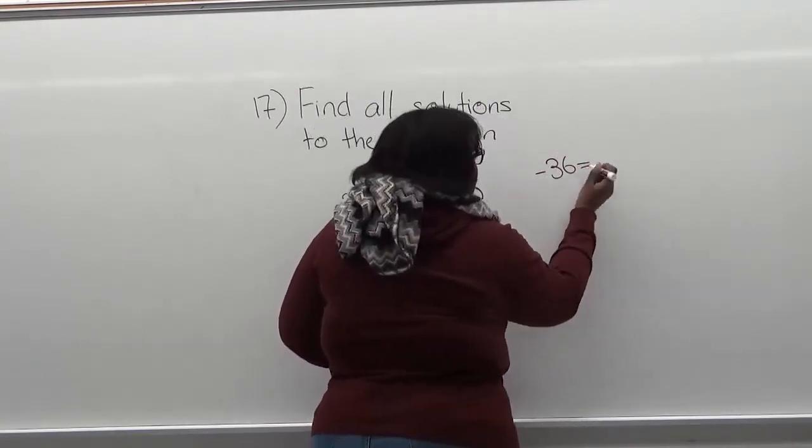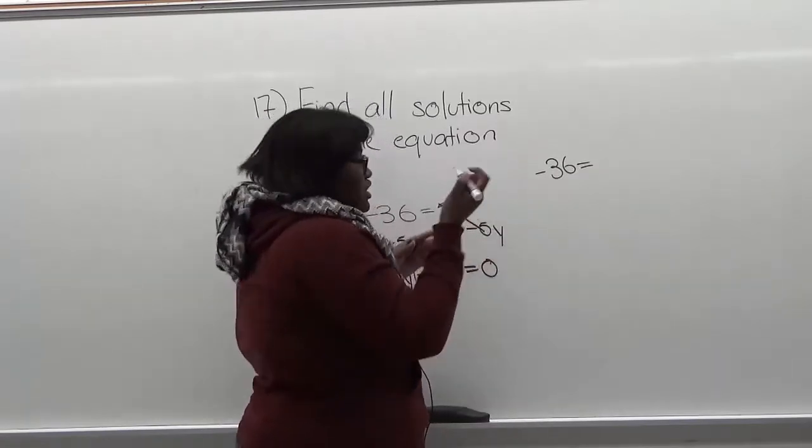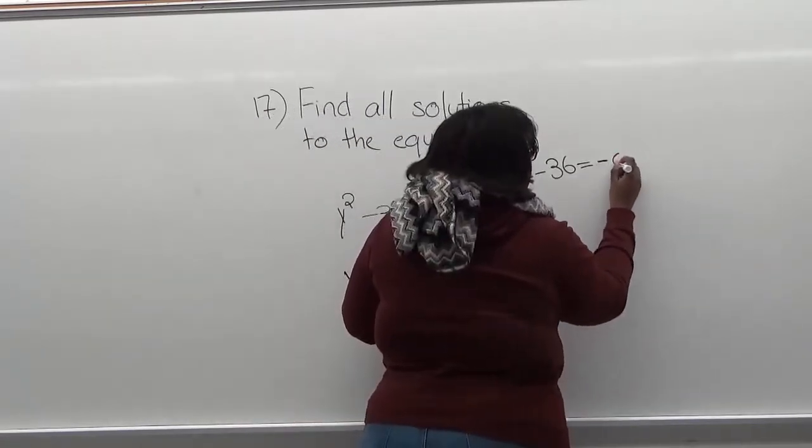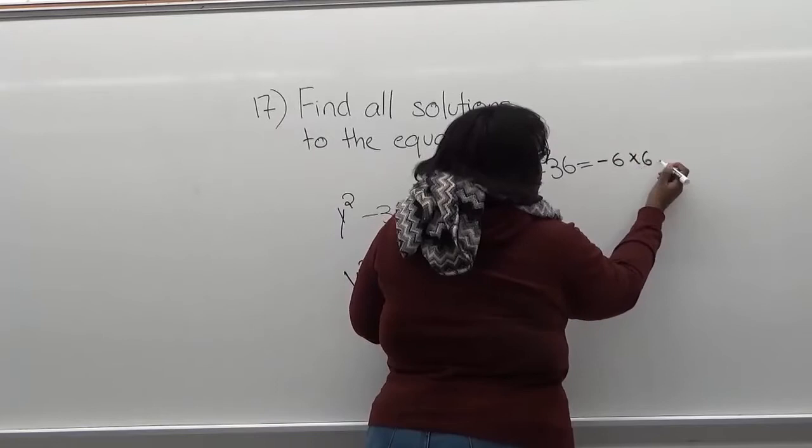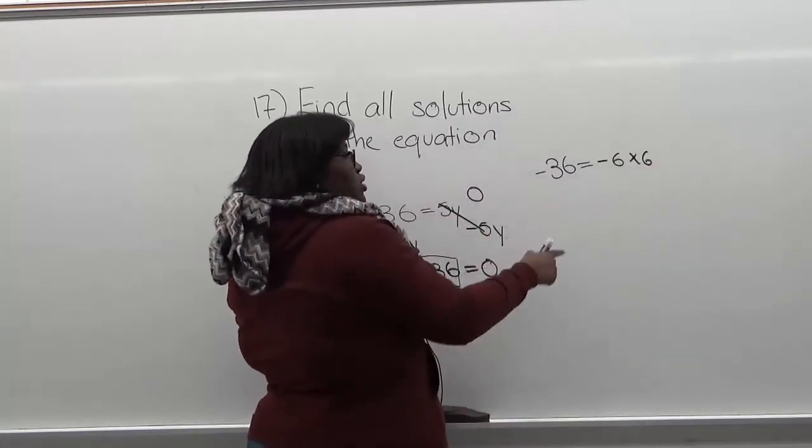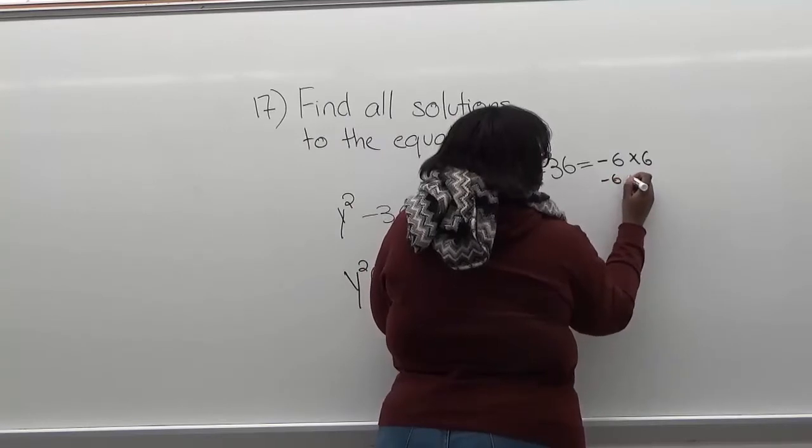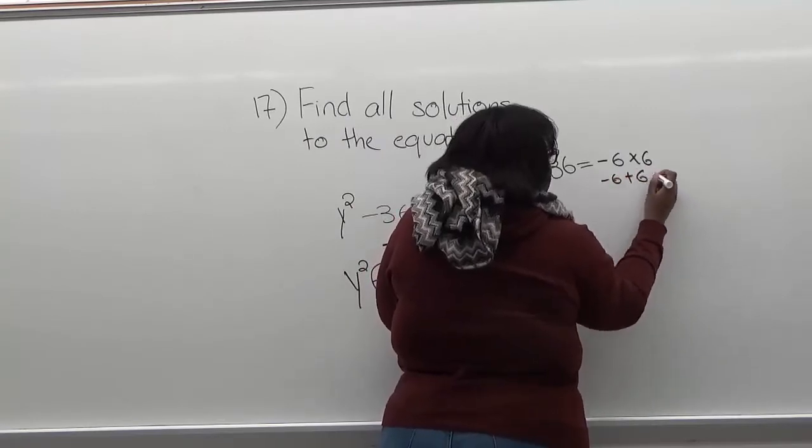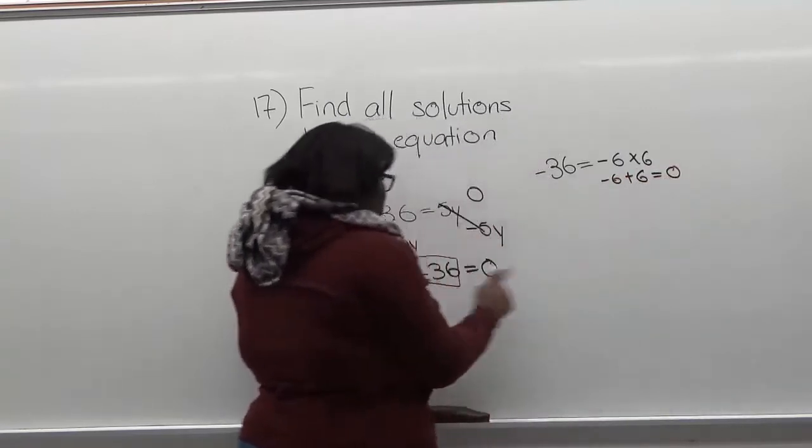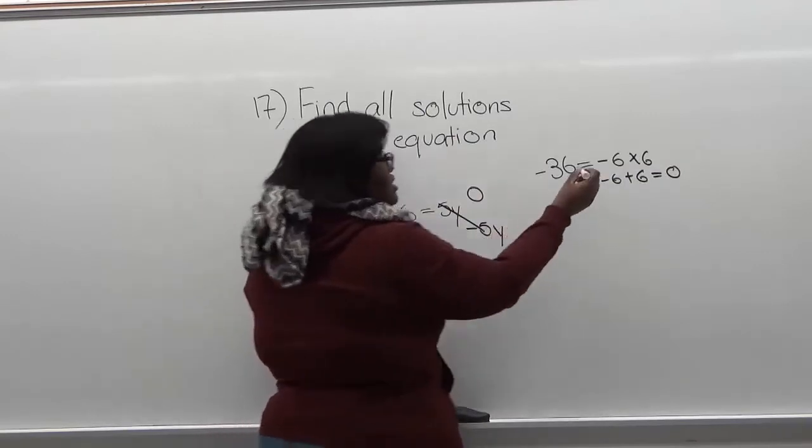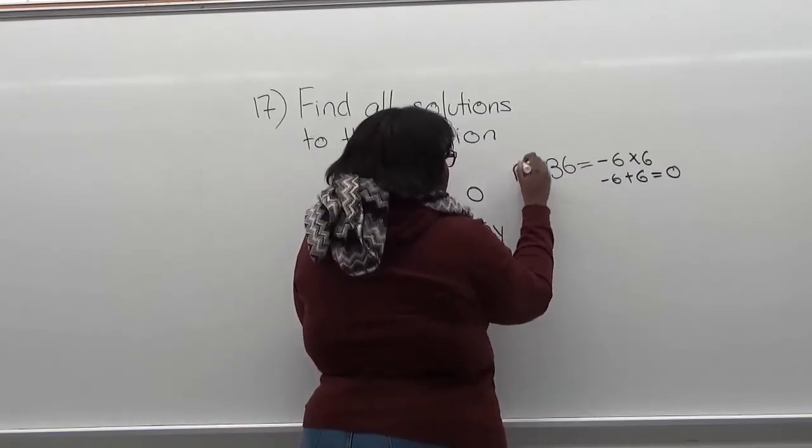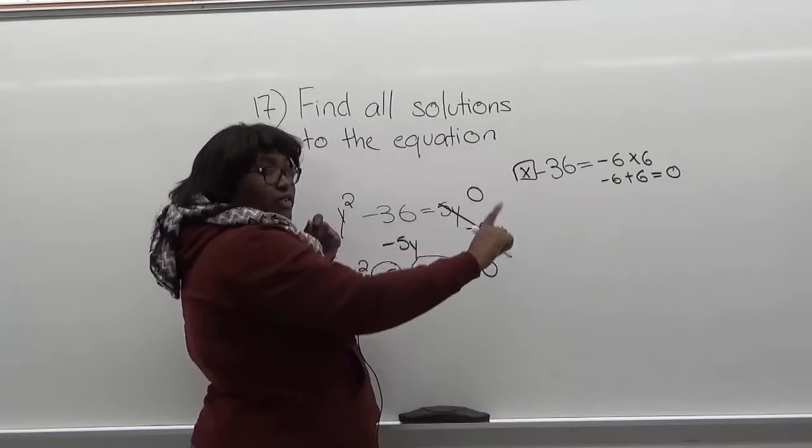We can try negative 6 times 6. Negative 6 times 6 will give you negative 36. But if you add negative 6 plus 6, it will give you 0, which isn't what we have here. So this cannot be the two factors for negative 36.